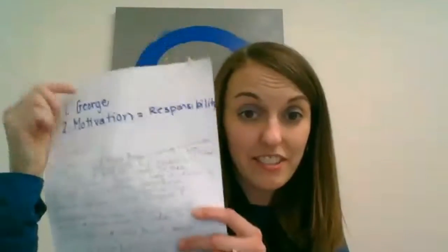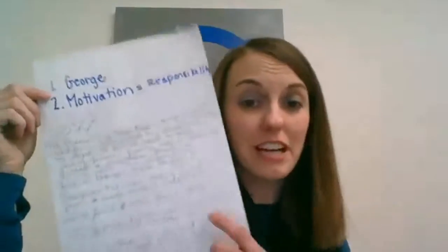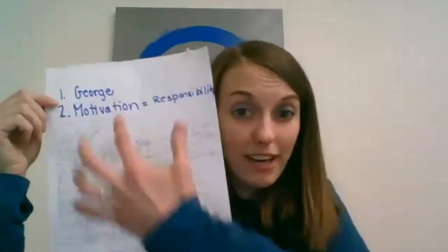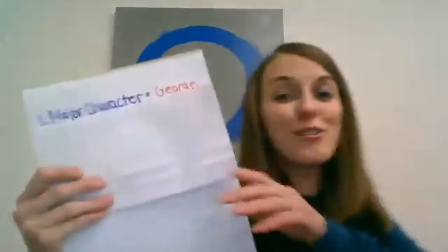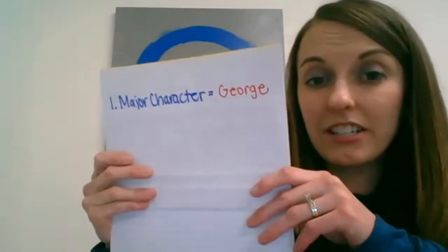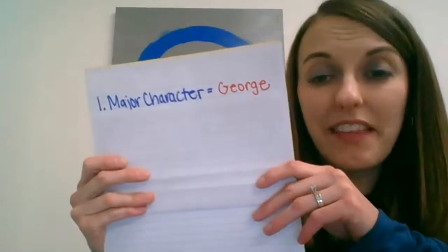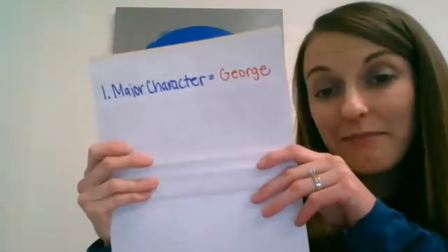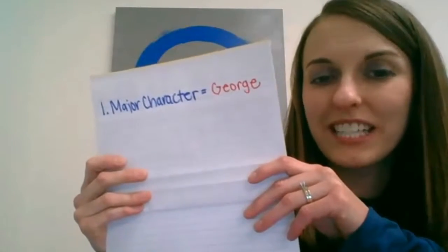I sat here for a while to think about this, and it did not come easy. I'm going to show you a nice pretty copy — this is where I started. I messed up and put 'responsibility' going off the page, and this was my writing all over the place as I was thinking about it. Step one, I chose a main character, and that was George. We're using Of Mice and Men as our example, as our mentor text.